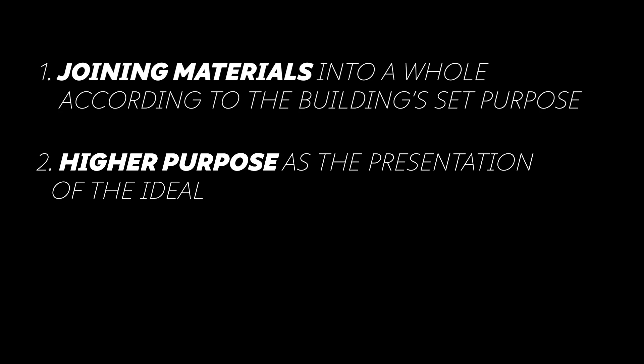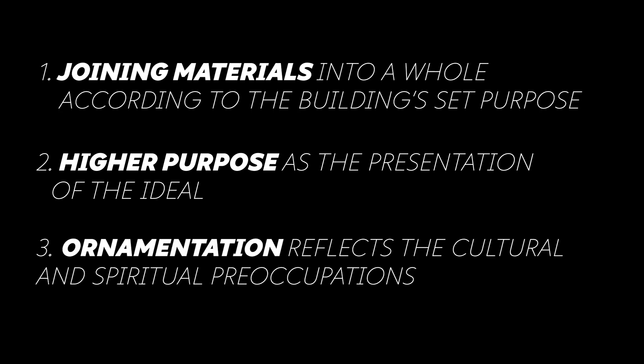Schinkel wrote down a number of rules for how good architecture should be made. Three ideas to highlight: first, architecture is about joining materials — a concept with a long tradition among many thinkers. Second, architecture should have a higher purpose and talk about the higher aspects of the human being; for example, when designing a museum, the design should communicate the holiness of art and teach the viewer. Third, Schinkel highlights the importance of ornamentation — the best of everything should be used: the best preparation, the best material, and the best workmanship. His work combined classical concepts with novel Romantic and Idealistic ideas.